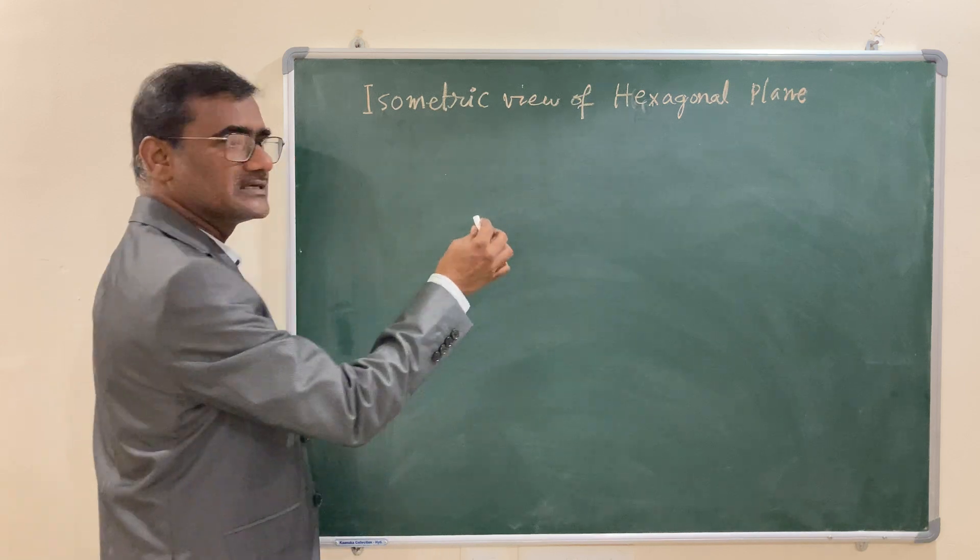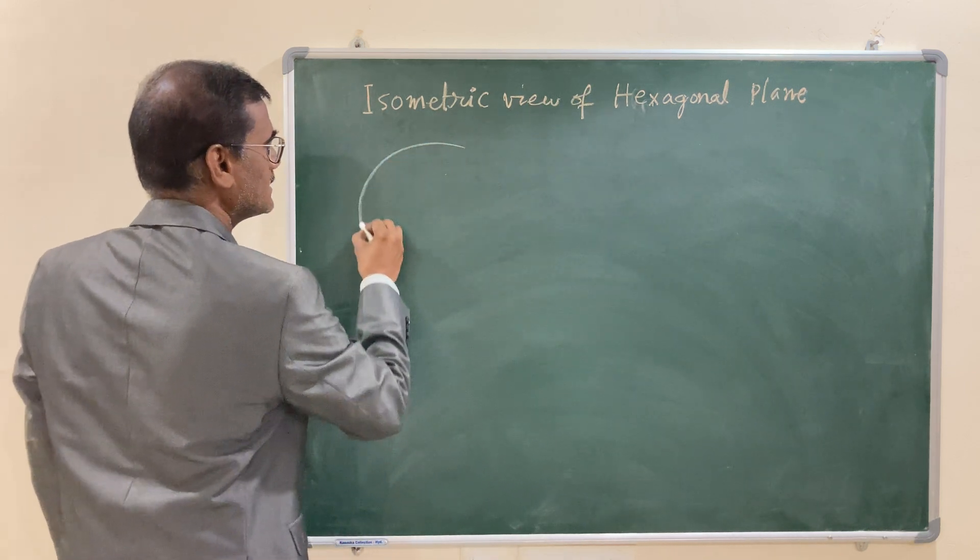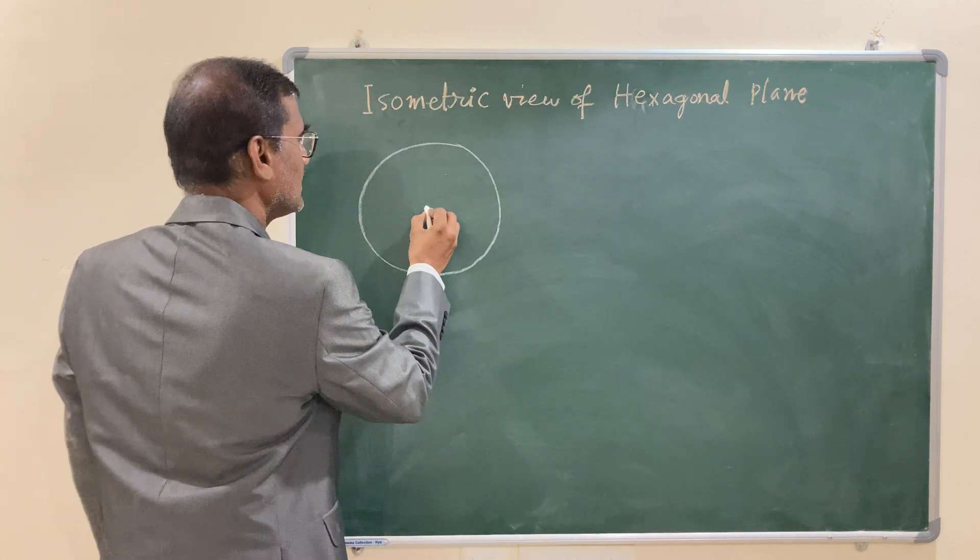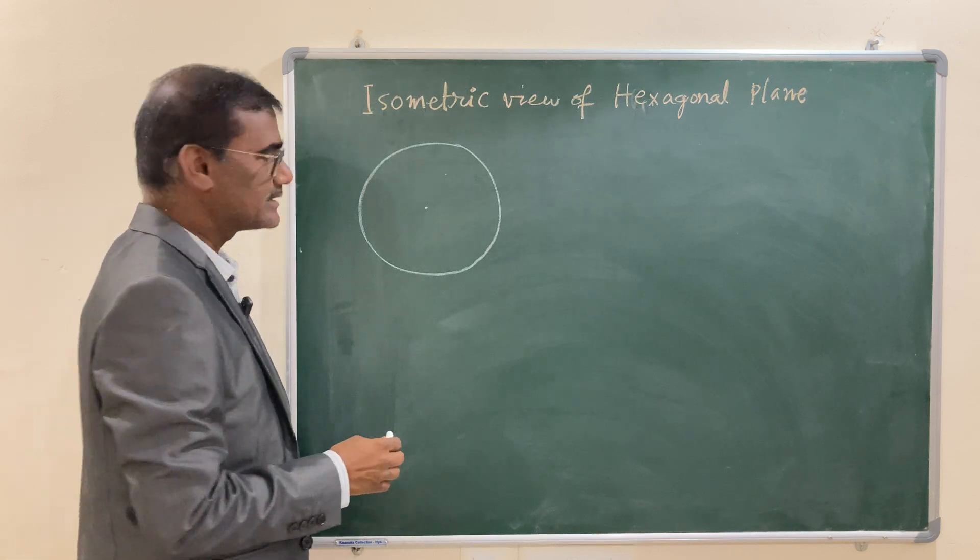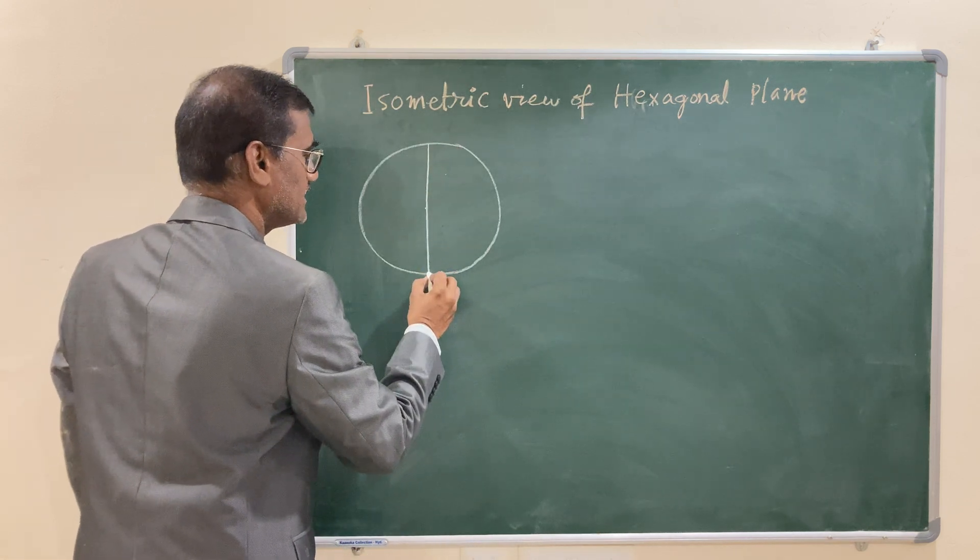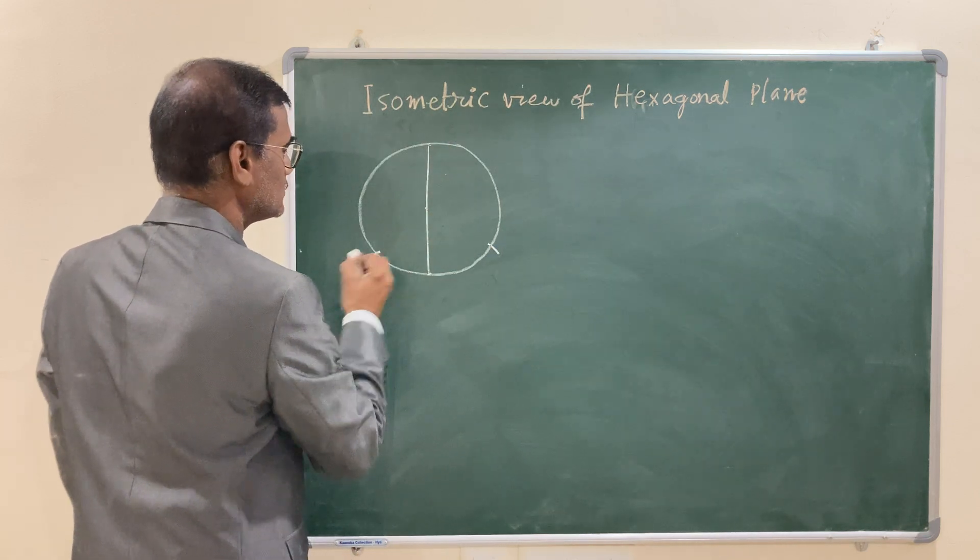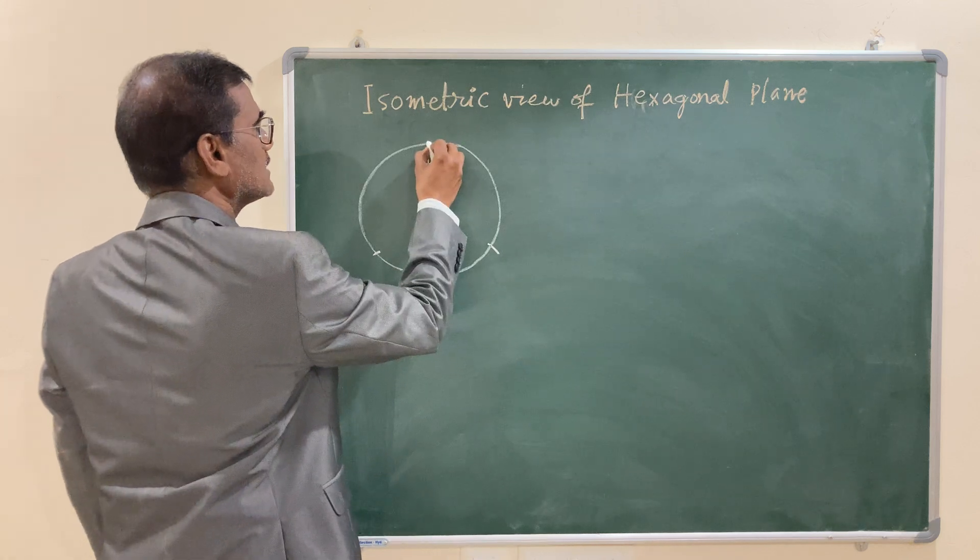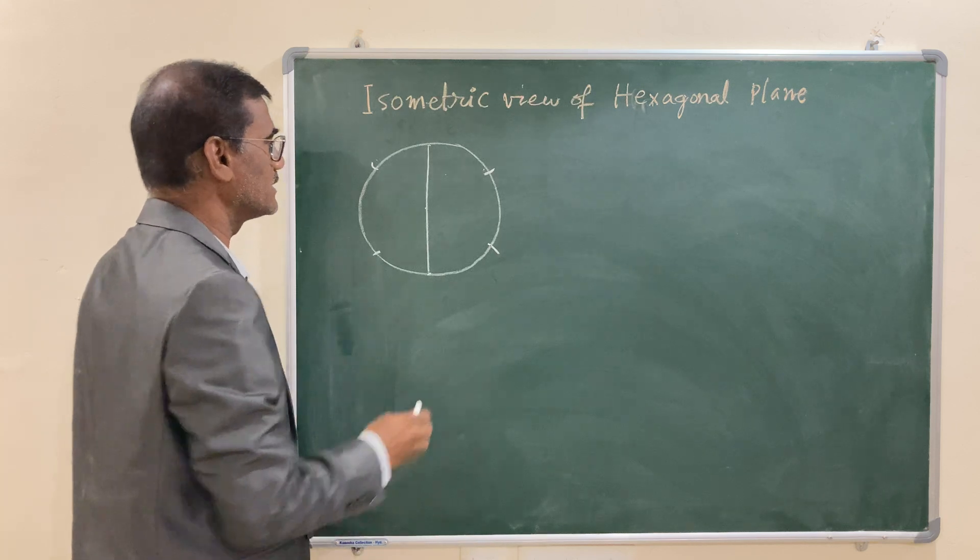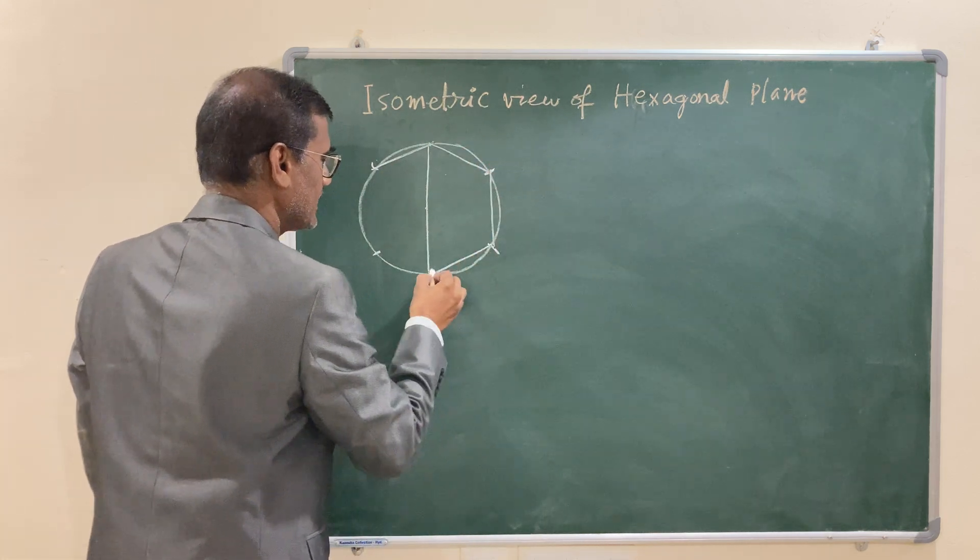First, you draw with radius as given edge 30 mm. Let us assume that 30 mm is the edge size and draw a circle with 30 mm as radius. And if you want to keep that edge vertical, draw the vertical diameter and the end points as center with the same radius either of the side, you draw the circular arc and the circumference. With other end, draw two more circular arcs. So that you are going to get the six edges. Join in proper sequence and you are going to get the hexagonal plane.